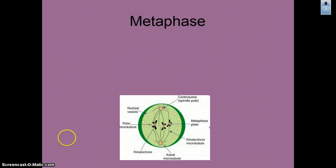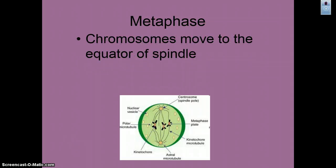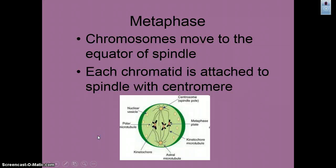In metaphase, chromosomes move to the middle — they line up on the equator. This phase is easy to recognize. Each chromatid is attached to a spindle fiber via a centromere, and the spindle fibers are attached back to the centrosome.